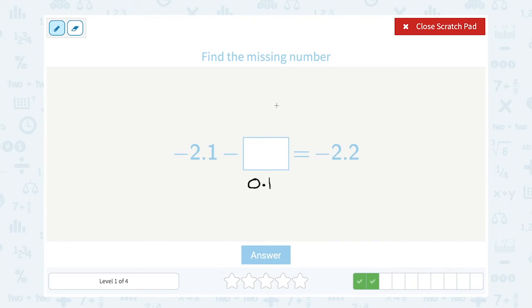Now if you didn't notice that right away, you could have set it up as a subtraction problem, you could have said 2.2 minus 2.1, what does that leave me with? But again, if you notice this, if I'm already at negative 2.1 and I drop it down by another one-tenth, then I'm going to get to negative 2.2. So you might be able to do some of these using some mental math.